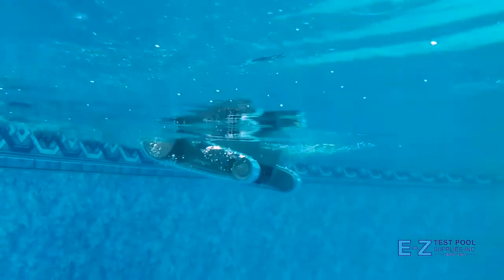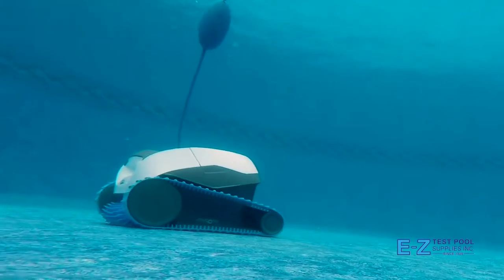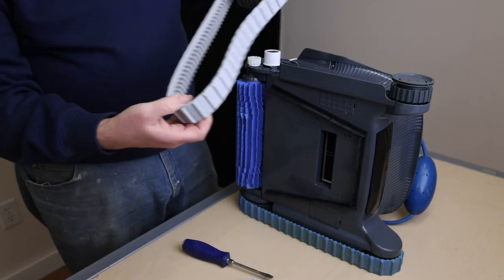In this video we're replacing the blue tracks with brand new gray tracks. These are interchangeable in this case but to avoid ordering incorrectly you'll want to make sure that the track specifically fits your robot.